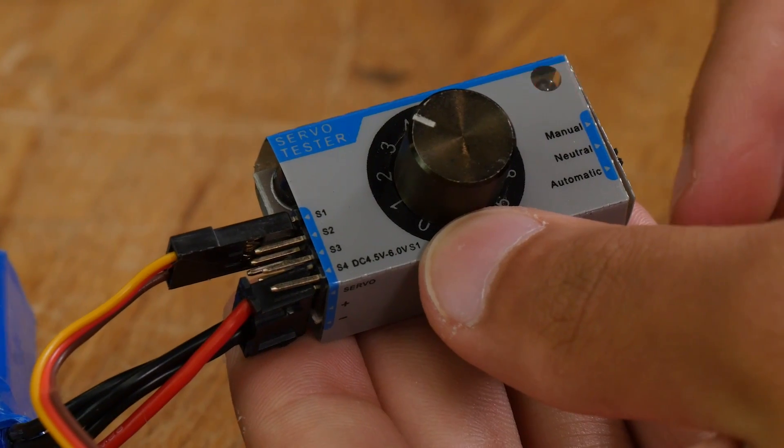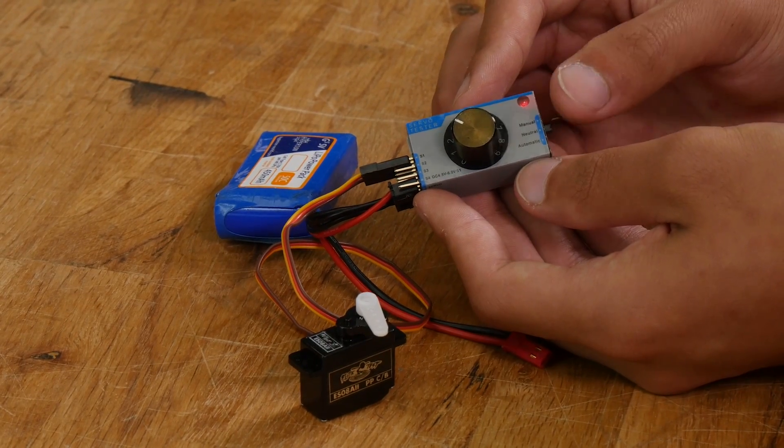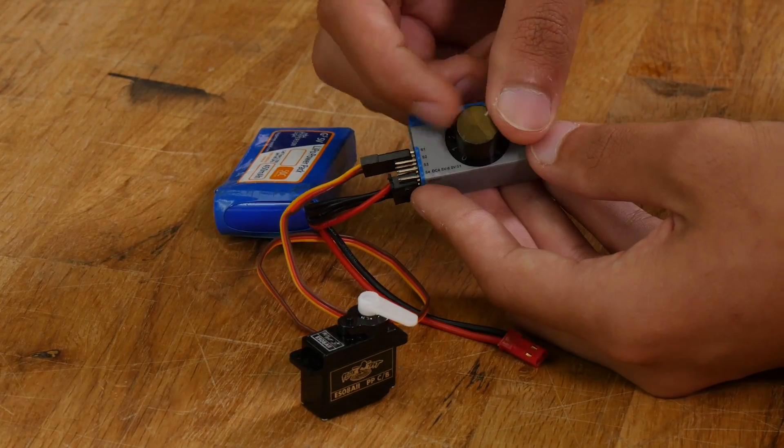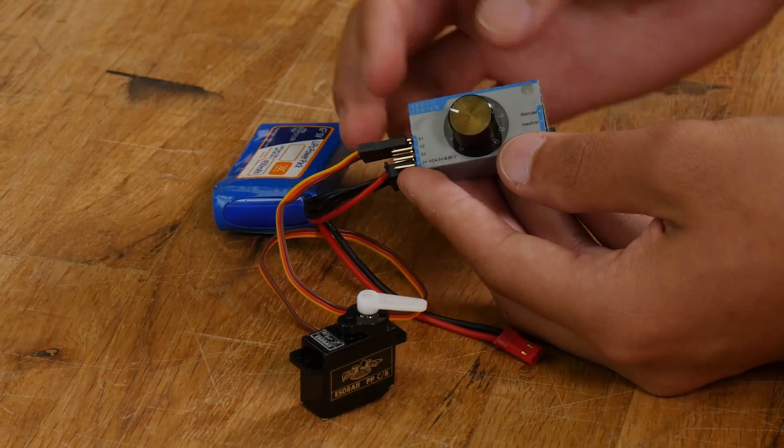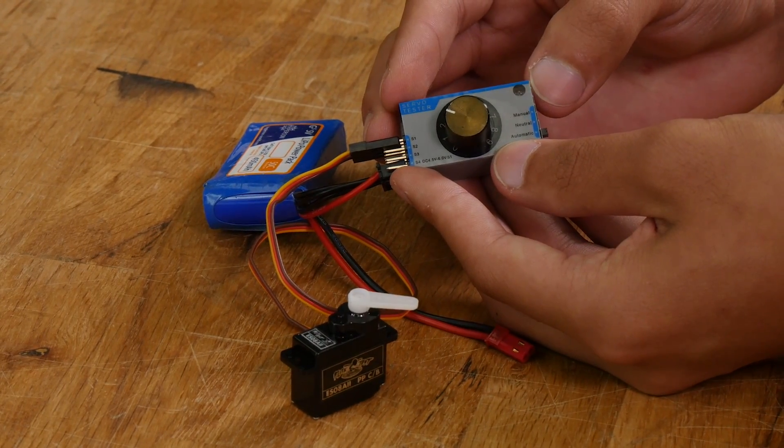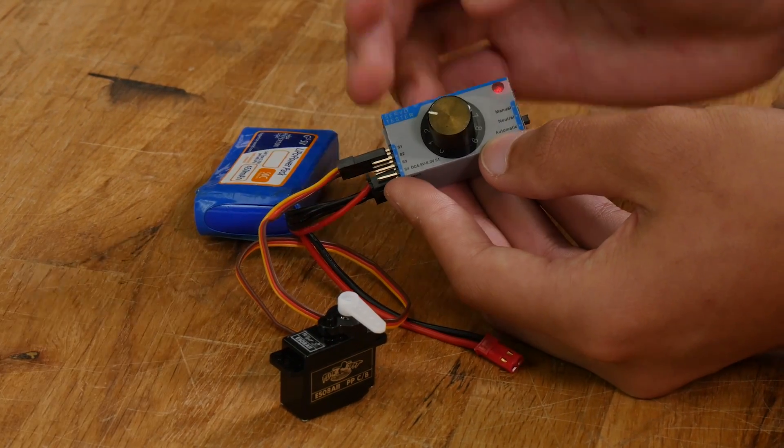You'll see that this servo tester has three different modes: Manual, Neutral, and Automatic. In manual mode, you can turn the servo by just turning the knob. In automatic mode, the servo just turns back and forth by itself. But for servo centering, you want to be in neutral mode. That'll just put the servo right to center.